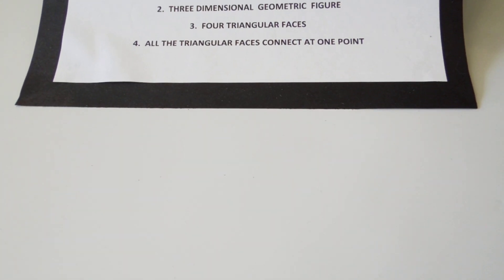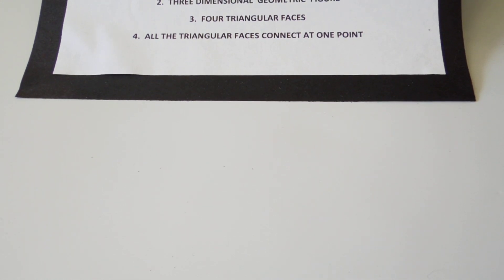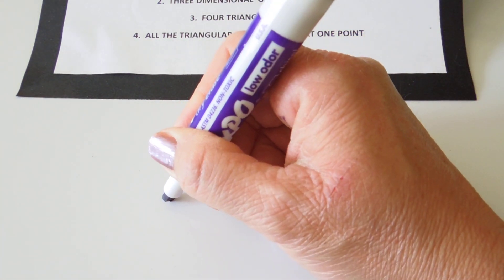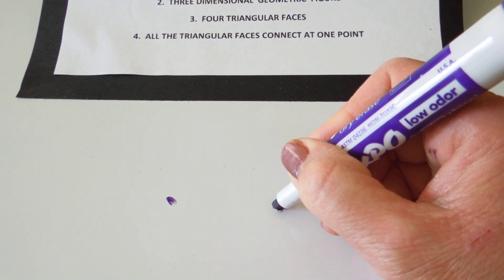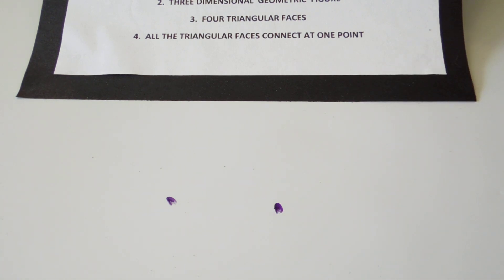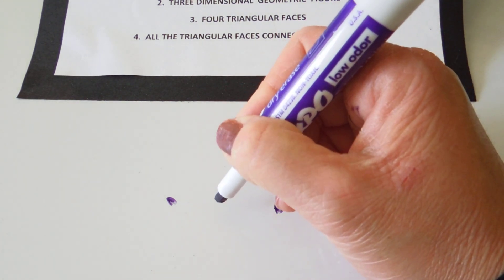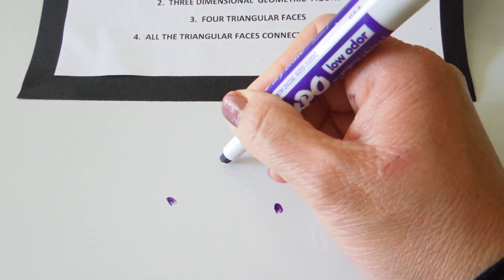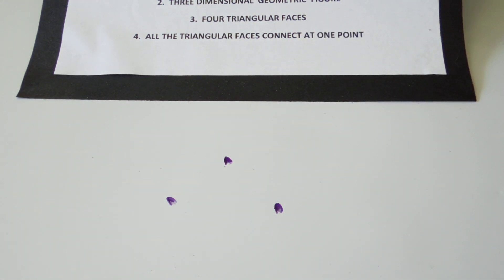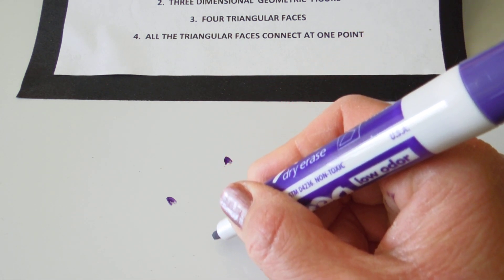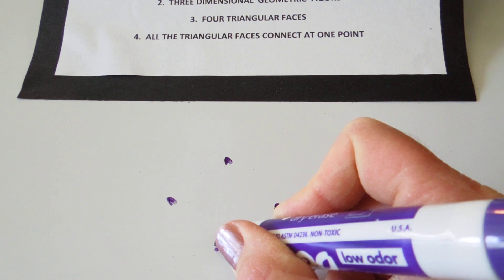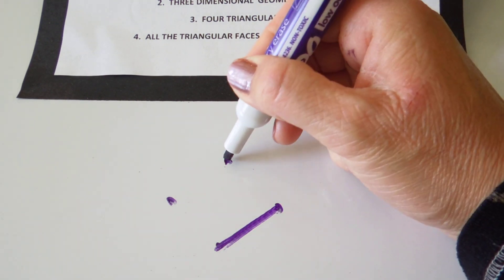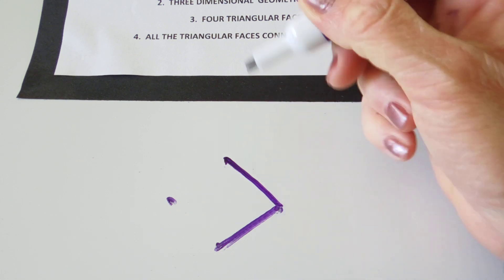The first step in making the base is to draw a point — a point is a dot in space. Then I'm going to go horizontally across from this point and draw another point. Then I'm going to go in between these two points to the center, go up vertically and draw another point. Then I'm going to go downward vertically and draw another point. Then, using diagonal line segments, I'm going to connect all the points, making as straight lines as possible.